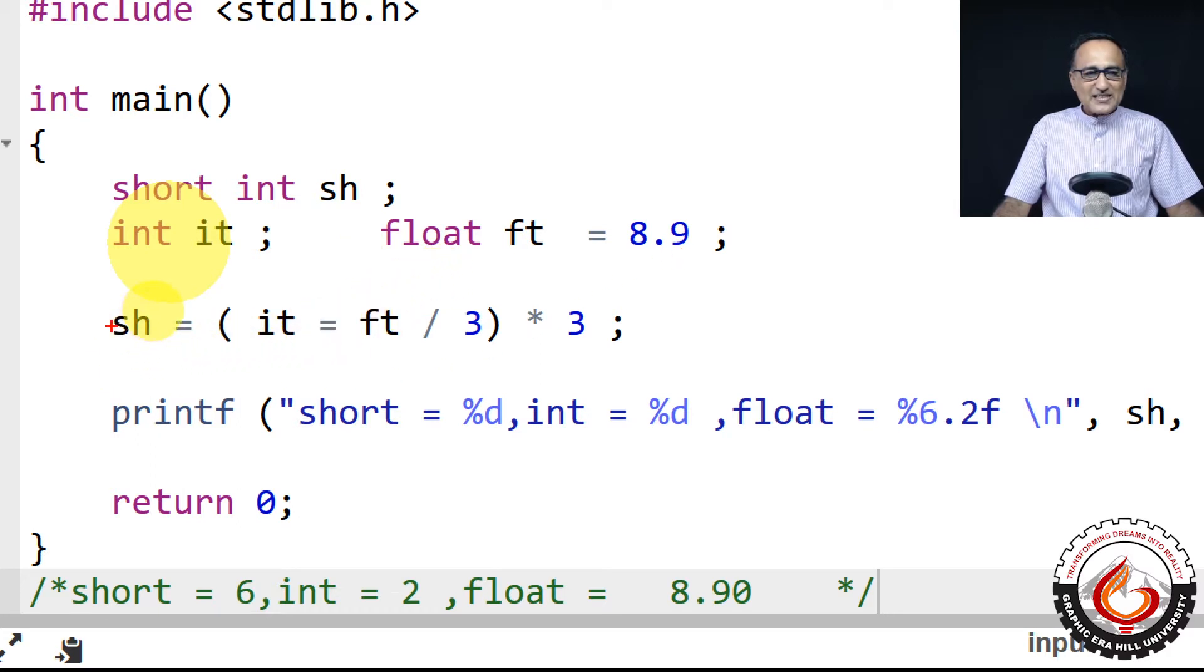Then what I did is I said short is assigned in brackets, integer which is assigned float upon three into three. So what happens is the thing in the bracket gets evaluated first. Now since this is an assignment, this will get evaluated first.